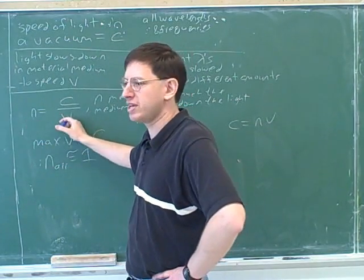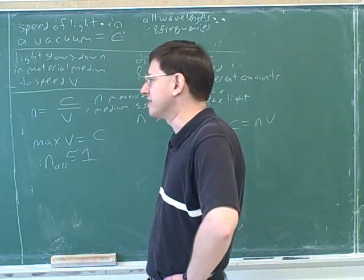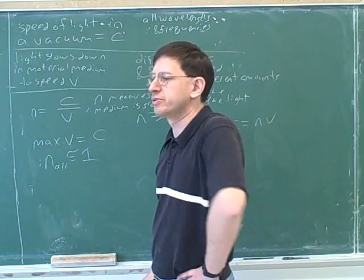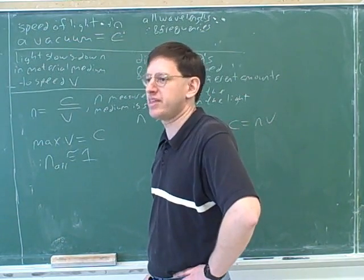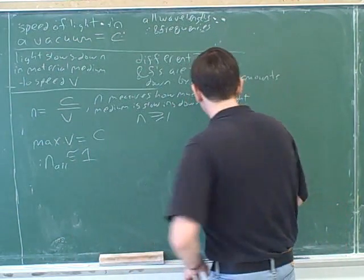If the different wavelengths have different speeds, then they have different Ns. And the different Ns will give them different angles in Snell's Law. So there's a homework problem where you have to work with N for blue light and N for red light. And then you find theta for blue light and theta for red light. And this is the explanation for, say, a rainbow.